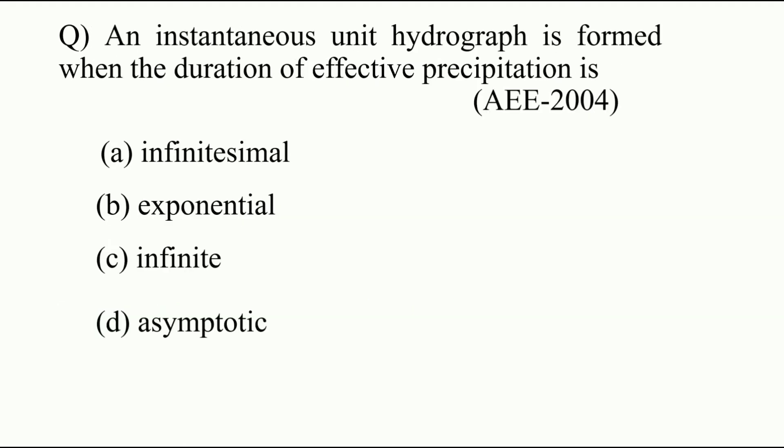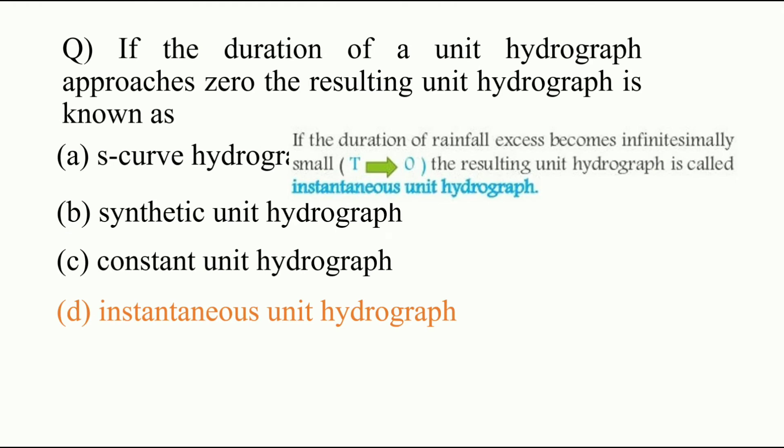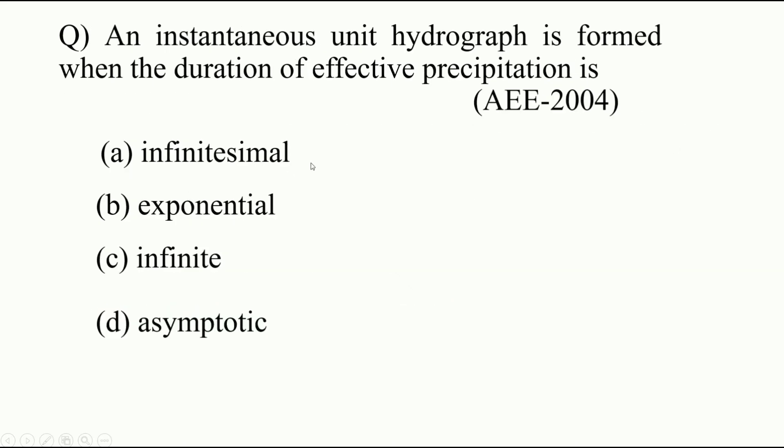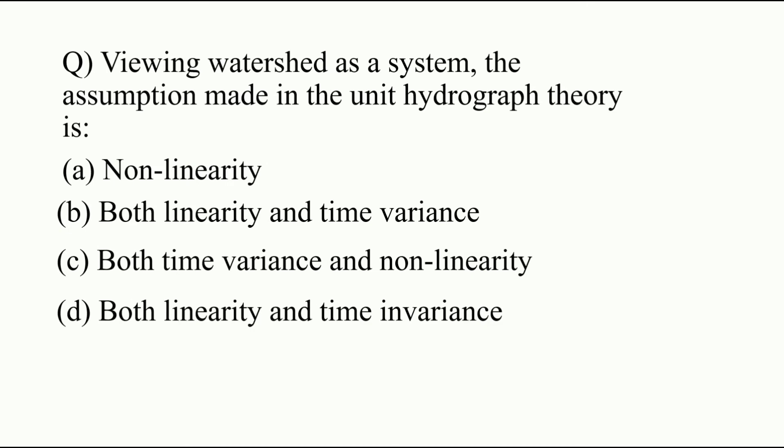Next question: an instantaneous unit hydrograph is formed when the duration of effective precipitation is — a) infinitesimal, b) exponential, c) infinite, d) asymptotic. From the previous question, we know the duration of rainfall excess becomes infinitesimally small. So the answer is A, infinitesimal.